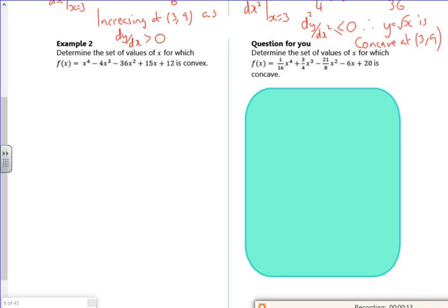Right, so, what do I know? I know it's convex if the second differential is greater than or equal to 0. There. So I need to differentiate it and differentiate it again, don't I?